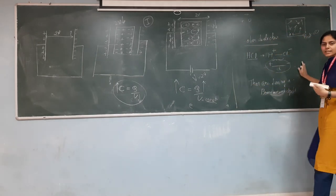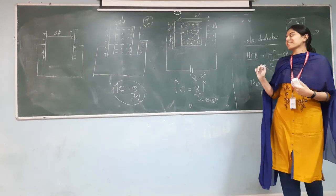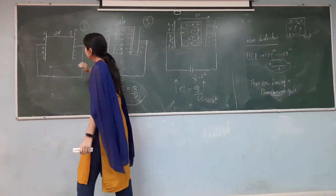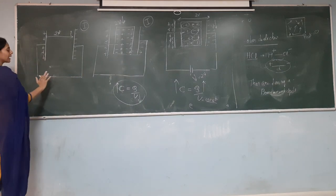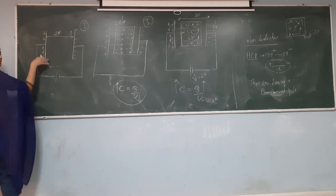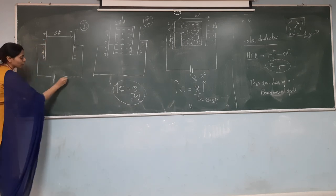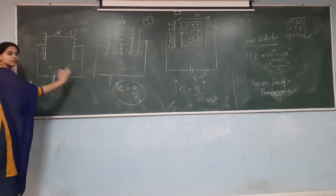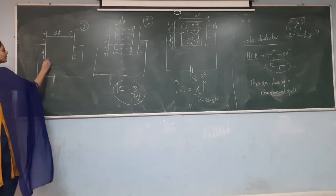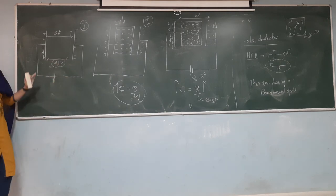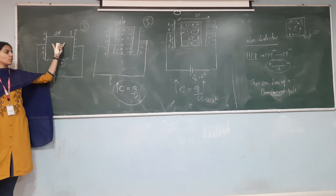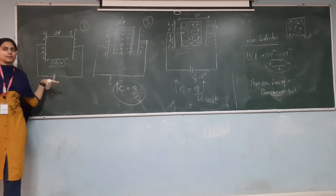This was the topic related to dielectrics. To summarize: in the first case, we connected the battery, charged the plates, then removed the battery — leaving only an air medium between the plates with charges and potential difference unchanged at 2 volts. In the second case, the dielectric is introduced and in both scenarios the capacitance increases. Thank you.